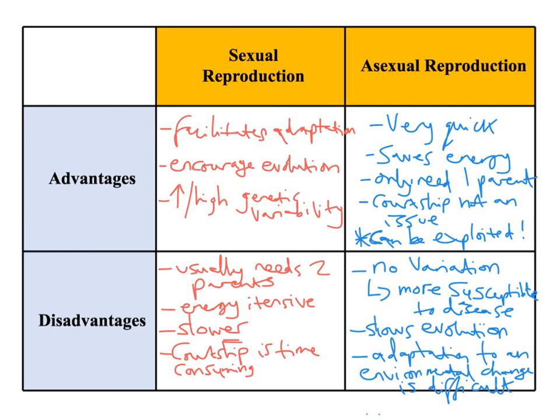So there we've got a quick summary table of the differences between sexual and asexual reproduction in terms of advantages and disadvantages, and previously we gave definitions for the core differences and some examples of asexual reproduction. If you've got any questions, just leave a comment at the bottom of the video - I hope all that helps.